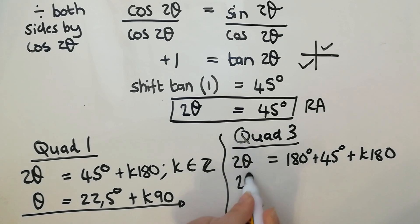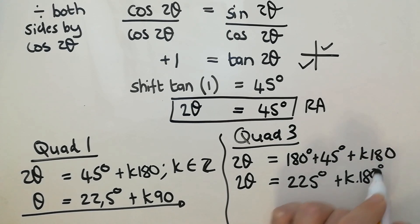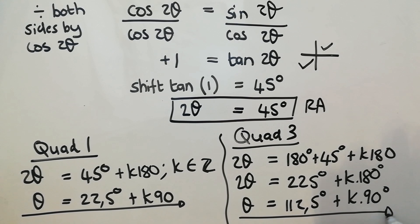So then I'm going to have 2θ is 225 degrees plus k·180. And then dividing through by two, I end up with 112.5 plus k·90. So those would be my answers if I was asked for the general solution.